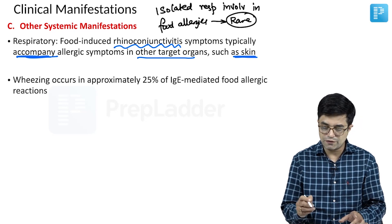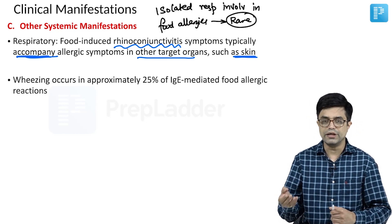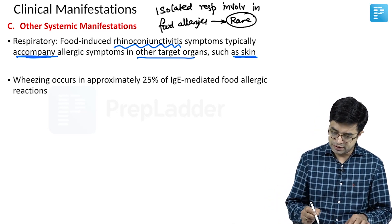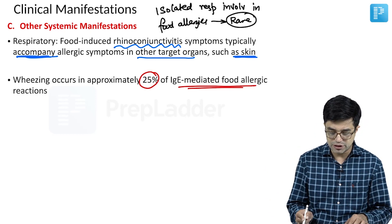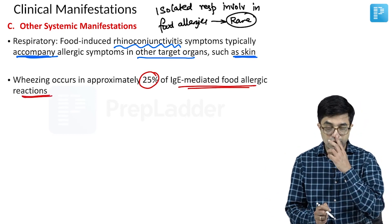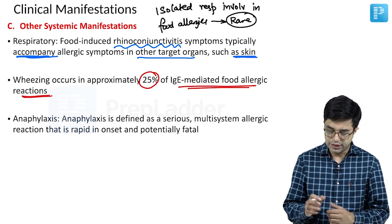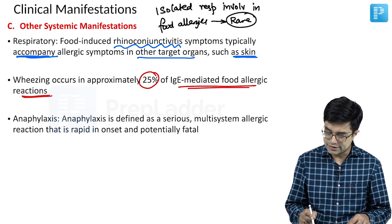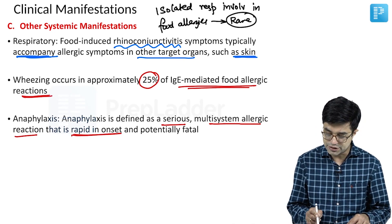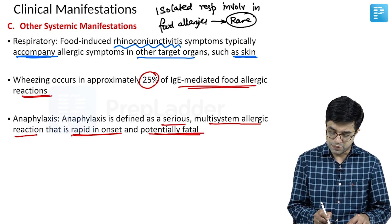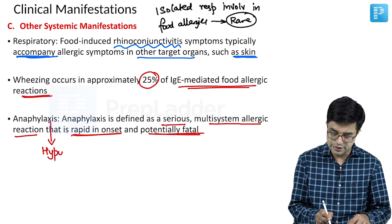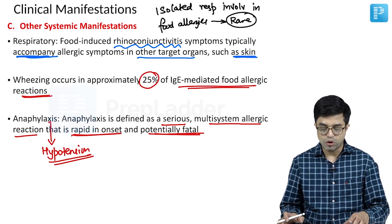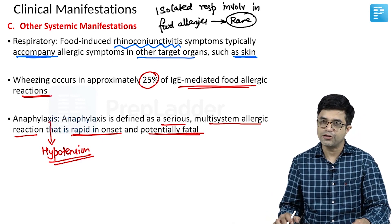Features of rhinoconjunctivitis include nasal congestion, sneezing and rhinorrhoea. Wheezing will occur in approximately 25 percent of IgE-mediated food allergic reactions, although not all asthma patients will have food allergies. Anaphylaxis can also develop in some severe forms. Anaphylaxis is defined as a serious multi-systemic allergic reaction that is rapid in onset and potentially fatal. Many of these patients will present with hypotension and need to be managed according to anaphylactic shock protocols. These are the important clinical manifestations related to food allergies to remember.